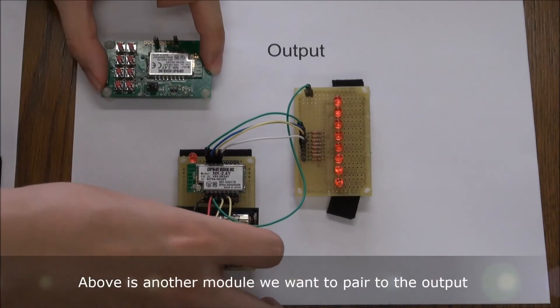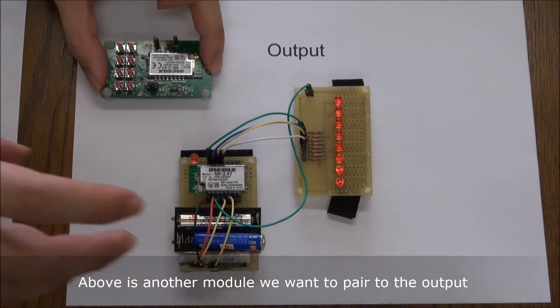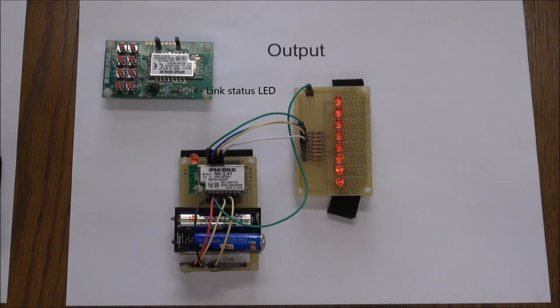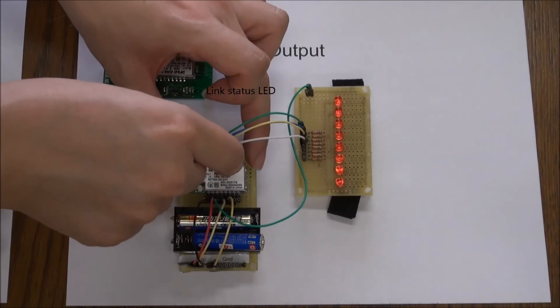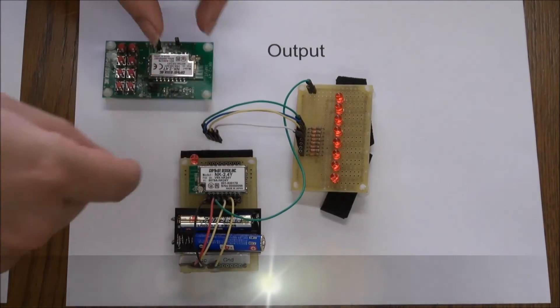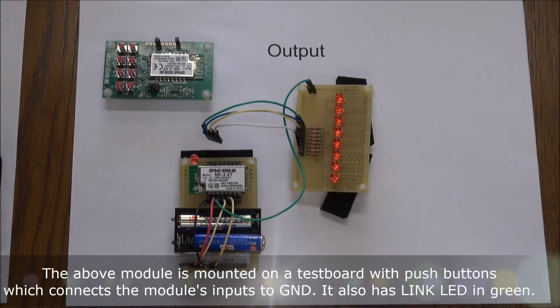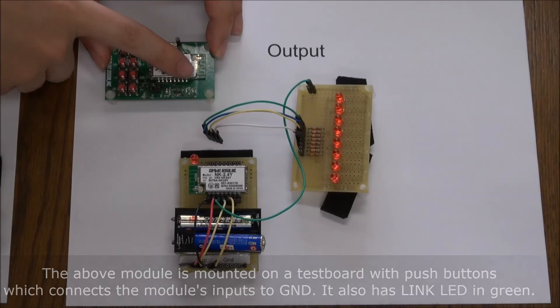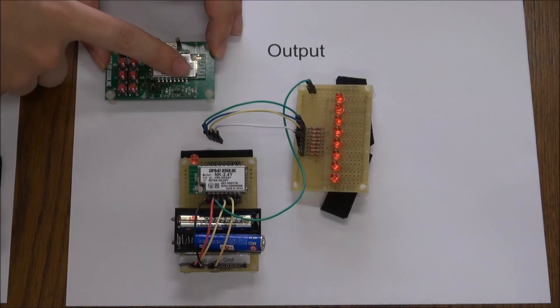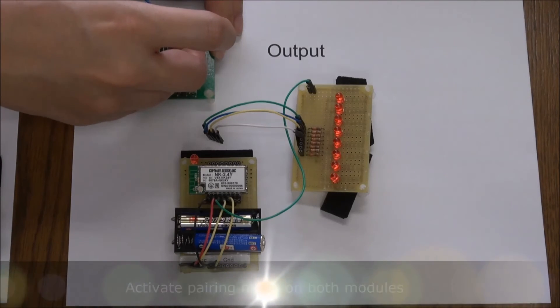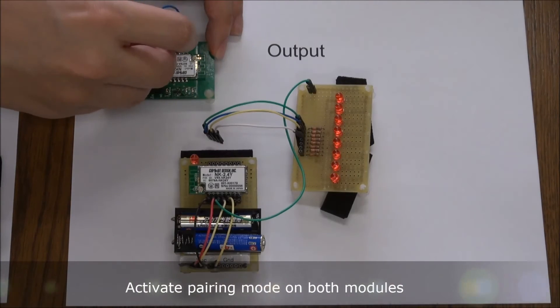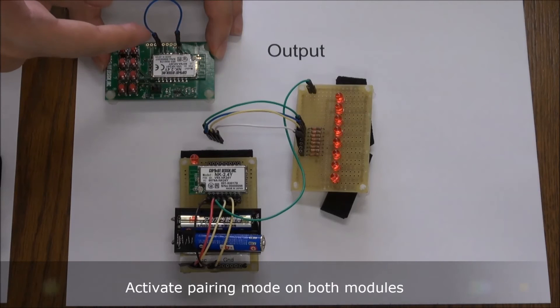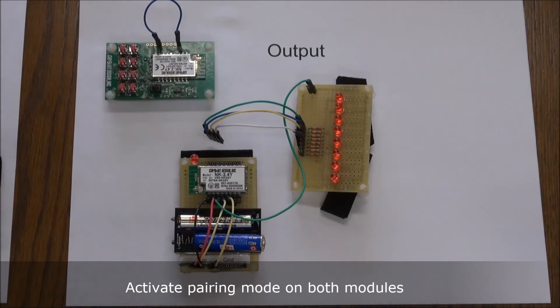I'll just switch everything off, and I need to disconnect my IOs. Then I need to connect the pairing mode terminal to ground on each of the modules, which I will do here. So now we've connected pairing mode terminal to ground. And I'll also do the same on here.